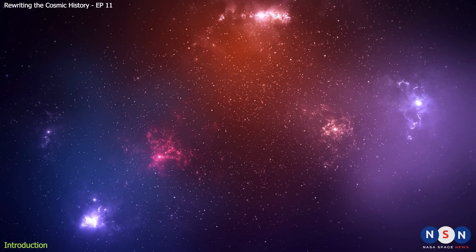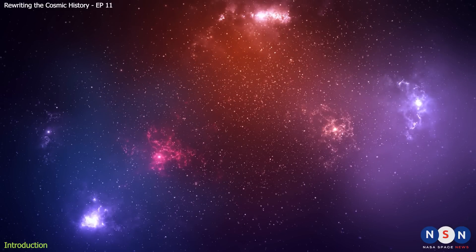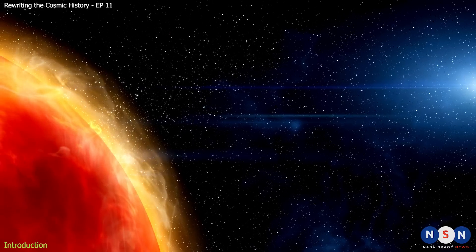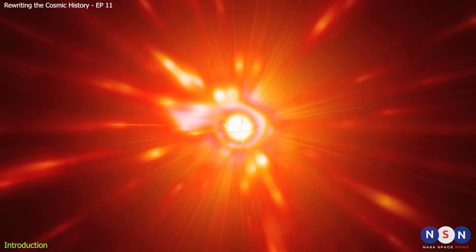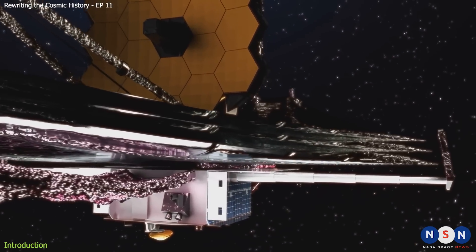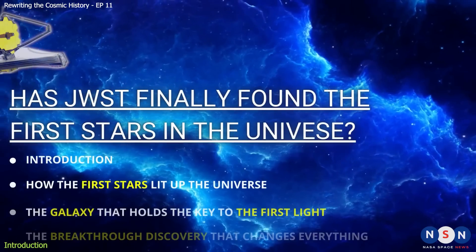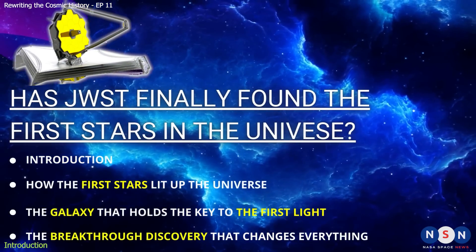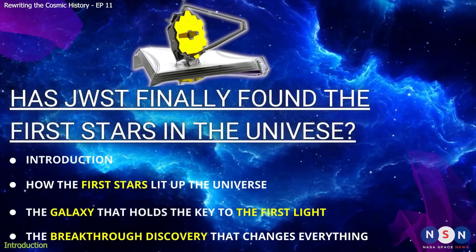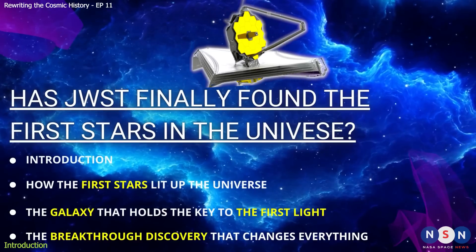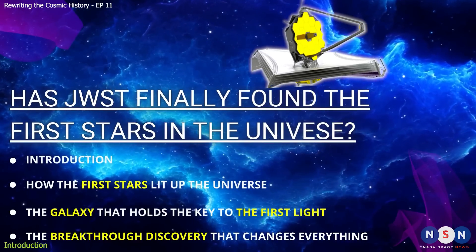In this video, we will explore the amazing story of Pop 3 stars, from their birth in the dark ages of the universe, to their detection with the most powerful telescope ever built, the James Webb Space Telescope. We will also learn about their role in shaping the evolution of galaxies and life as we know it. How did they form? How did they die? How did they change the universe forever? And how did we finally find them?